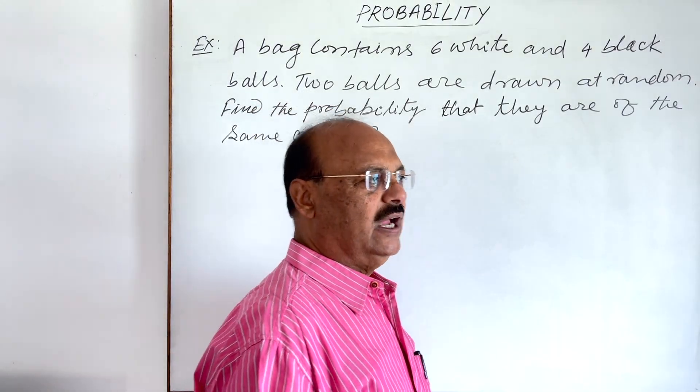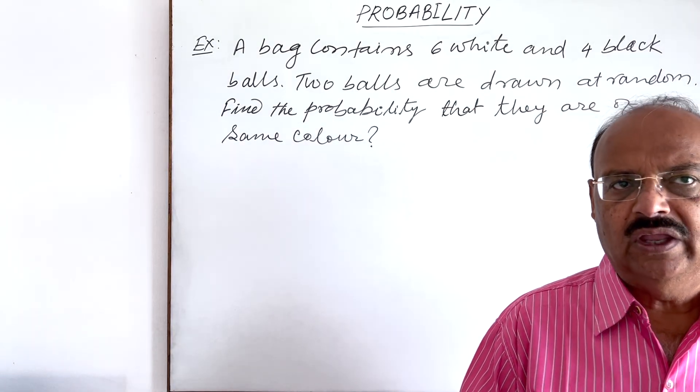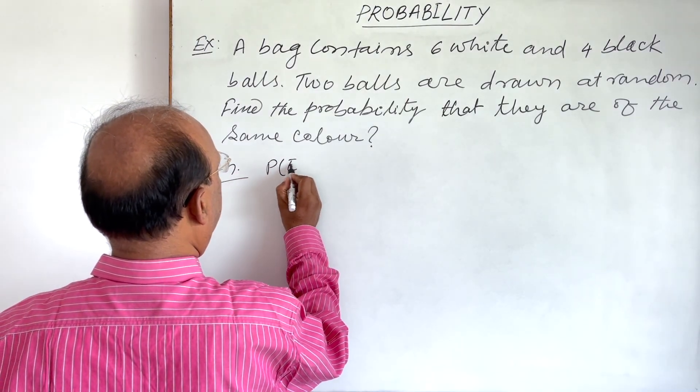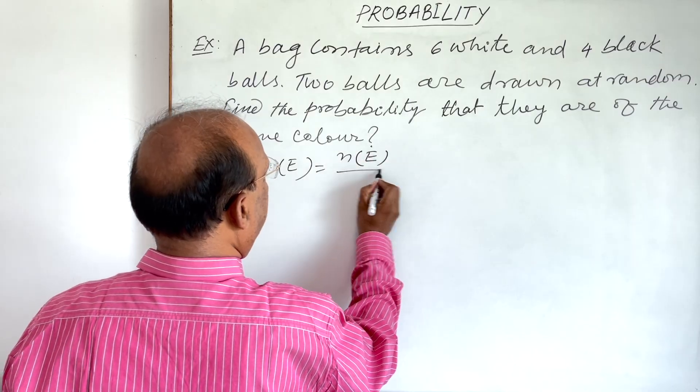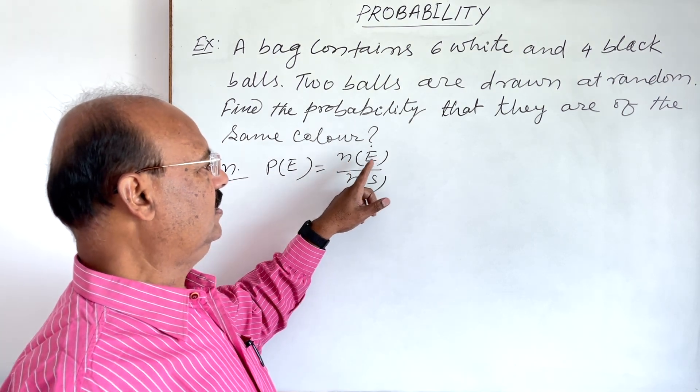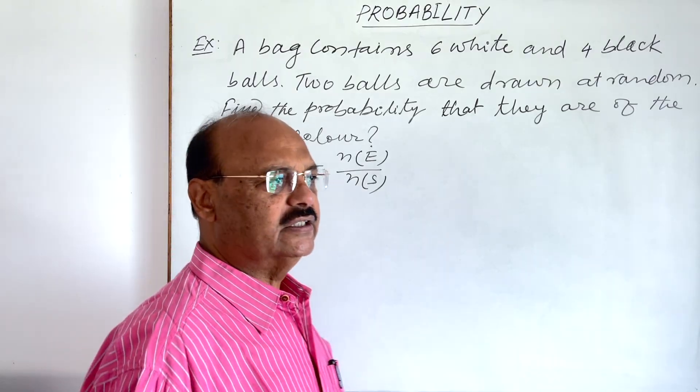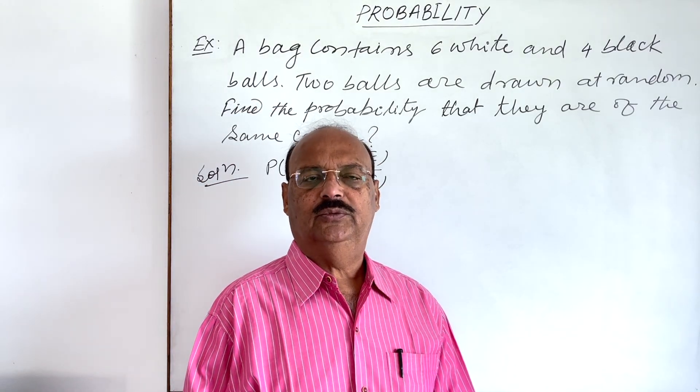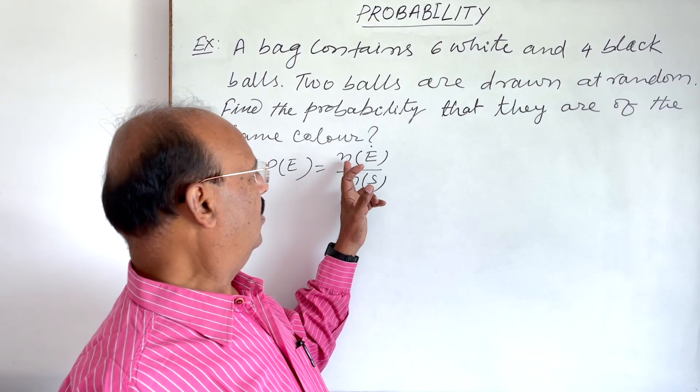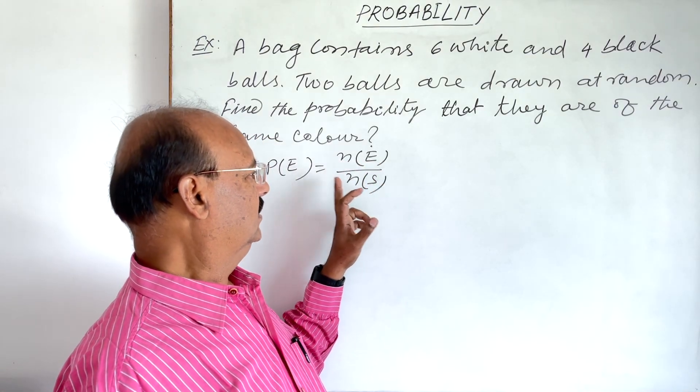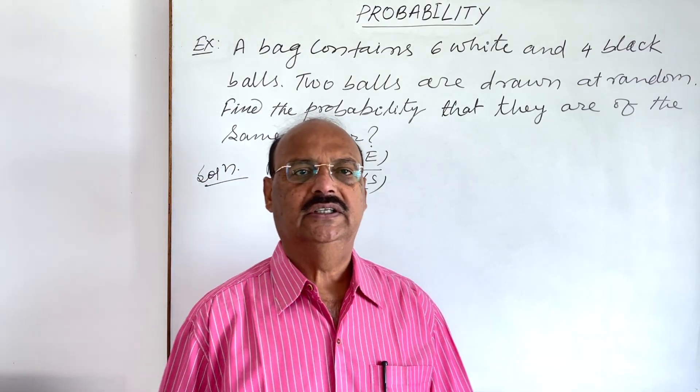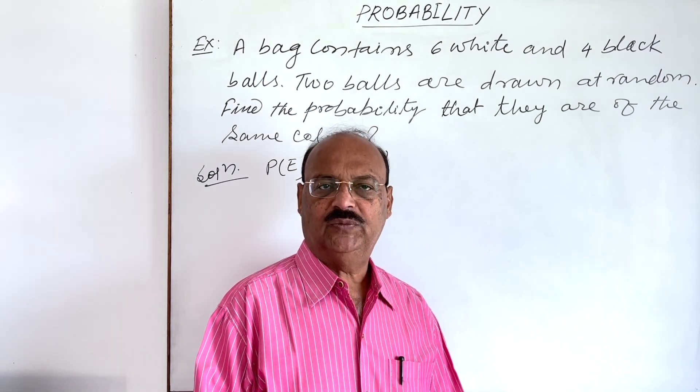As we have discussed in previous videos, probability of any event P(E) is equal to n(E) divided by n(S). What is n(E)? n is the number of elements in the event. Event is the outcomes which are favorable, which are required. So number of favorable items divided by total number of possible outcomes.